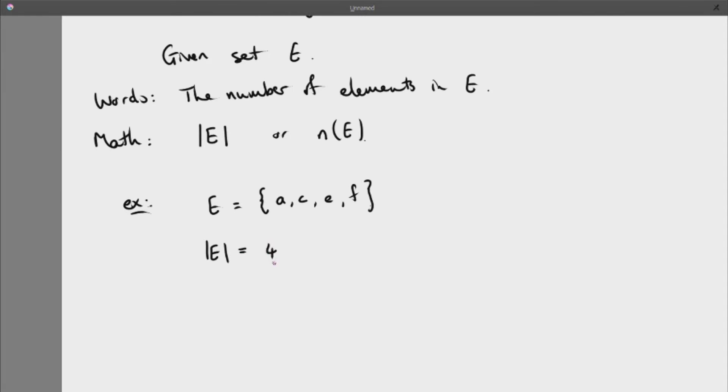So E without the lines is a collection of things. With the lines it's a number. Yes, they're connected, but they're very different things. I can't add sets together. I can add numbers together.